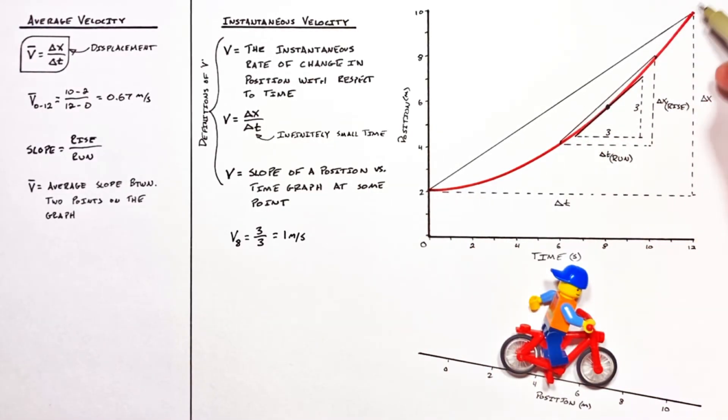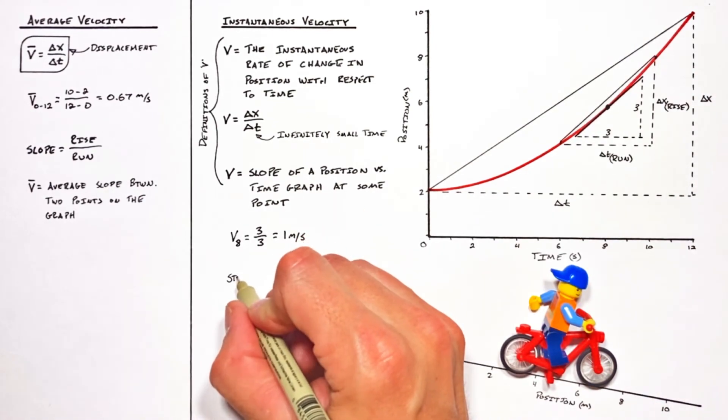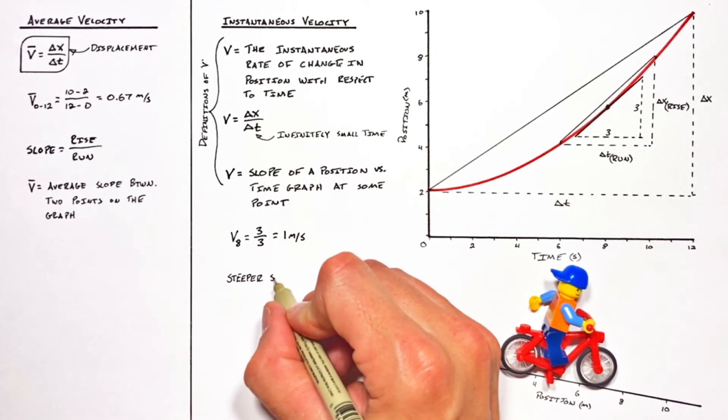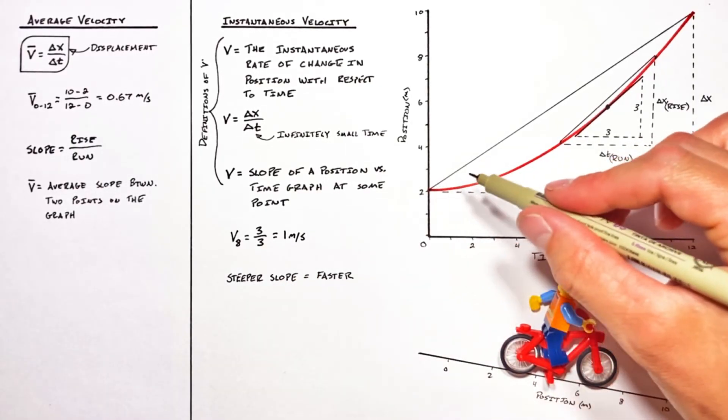As he sped up down the hill, the slope got steeper and steeper. Ultimately that just means that the steeper the slope, the faster the guy was going.